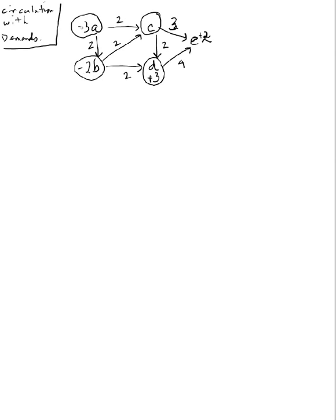Okay, here's another example of computing circulation with demands. We see here I have got five nodes, A, B, C, D, and E.